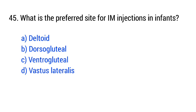Question 45. What is the preferred site for IM injections in infants? The right answer is option D: Vastus lateralis.